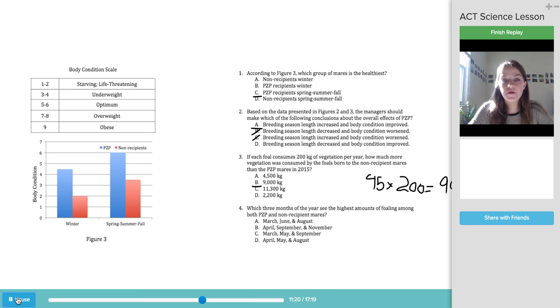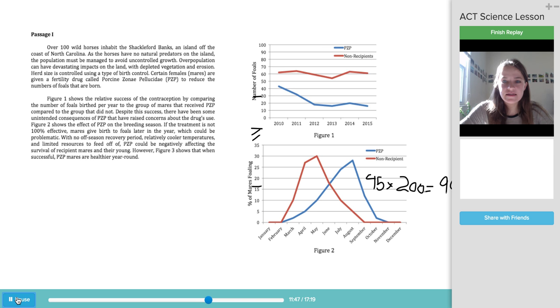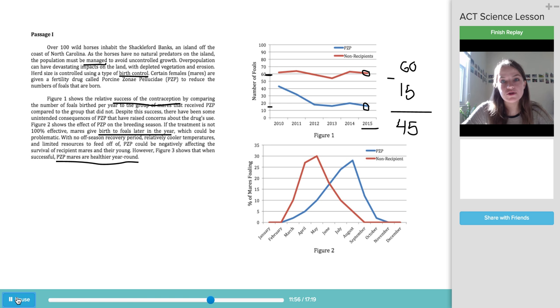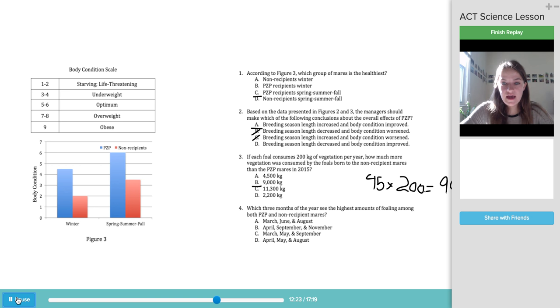You're not given a calculator on the science section, but the math won't be too challenging. So just so you know. Question four. Which three months of the year see the highest amounts of foaling among both PZP and non-recipient mares? Again, this question doesn't point us exactly to a figure. But by question four, we're pretty familiar with the breakdown of the figures. And we know figure two discusses the months of the year and the foaling. So let's quickly go back to figure two. So we're looking for the months of the year that see the highest foaling between both groups. So we're not just interested in the red or the blue, we're interested in both. And so right away you can see the peaks. There's one here. Here's another key peak for the PZP. And then the third highest peak is about here. And so let's look at those months. This is April, May, and August. So we can now go check and see if any of those answers match up to them. April, May, and August. And you'll see that D matches this.